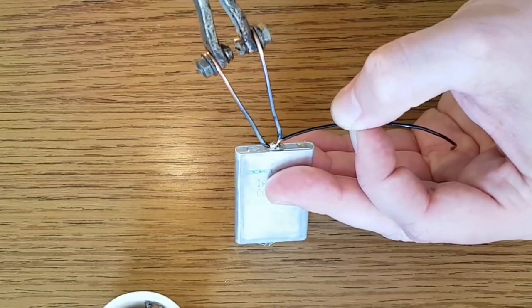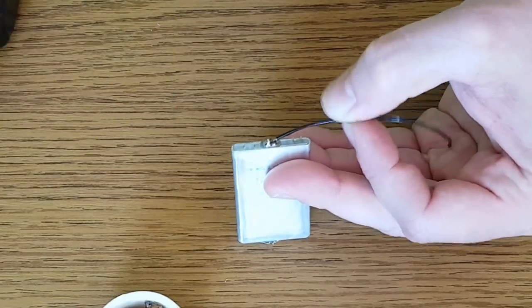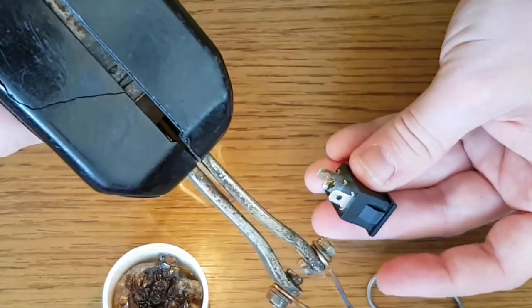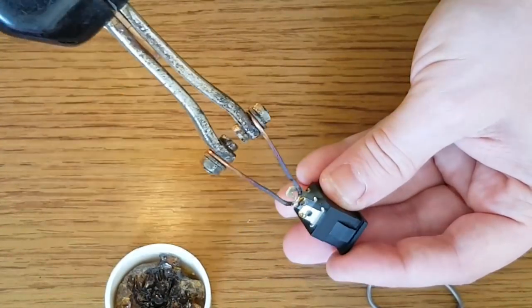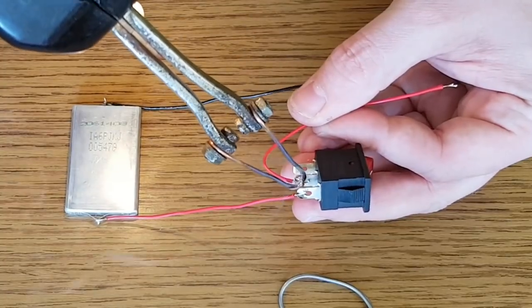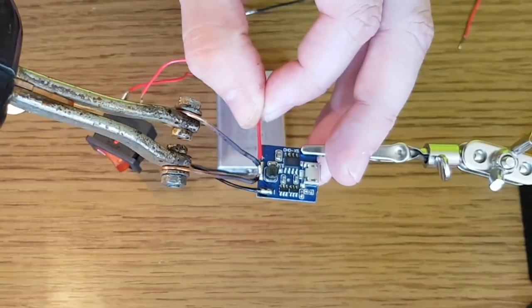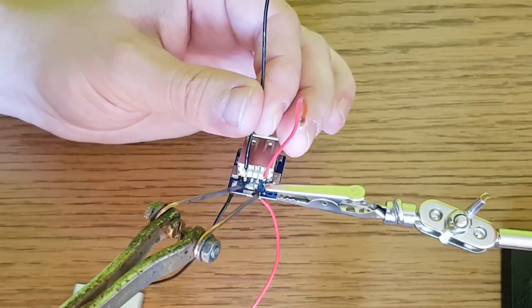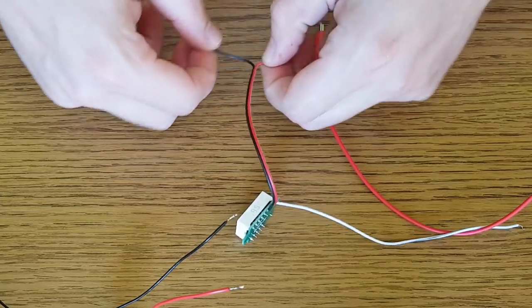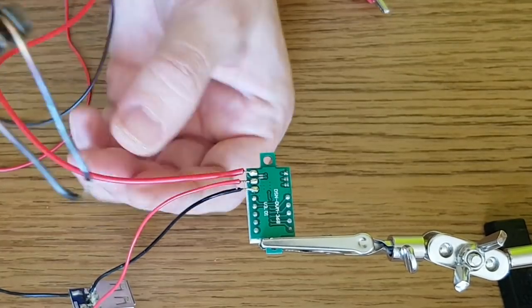When you solder the wires on the battery, try to make it quick. The heat generated by the soldering gun can damage the battery. Solder the battery and voltmeter wires to the charging module and try it.